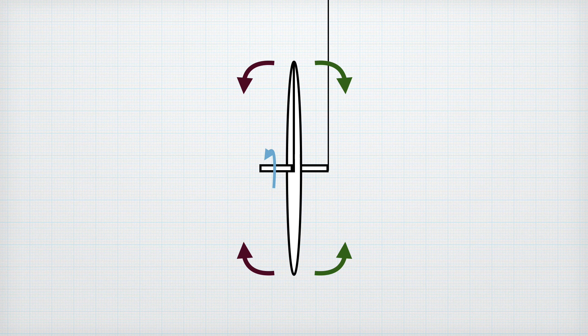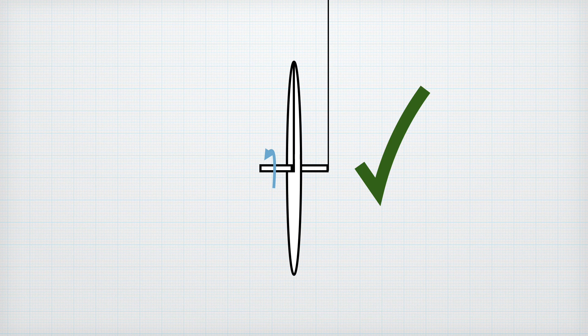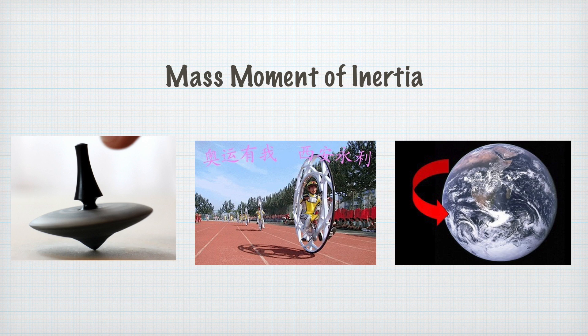Hence, no segment is able to flip over and consequently the wheel doesn't flip. In physics, this phenomenon is summarized by the term mass moment of inertia and is the reason why the rotation axis of any quickly rotating body is stable.